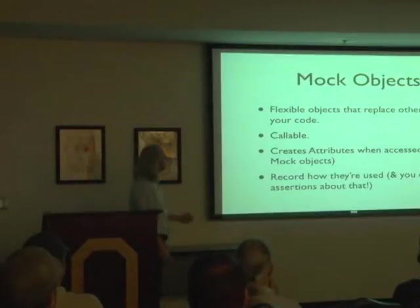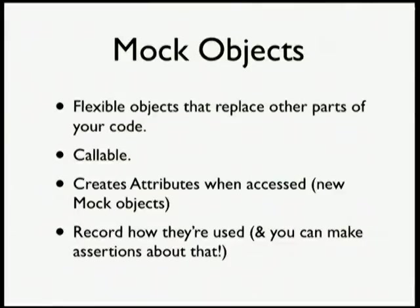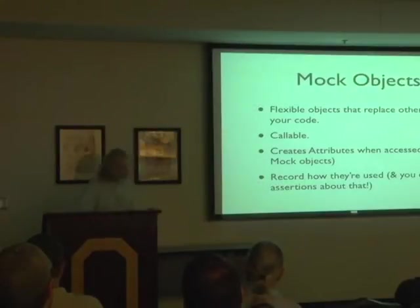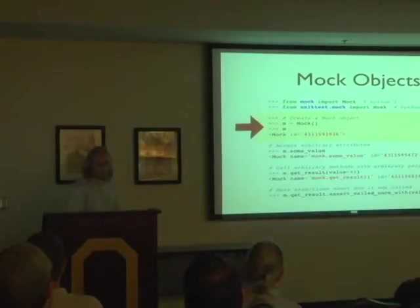Let's talk about mock objects. They are flexible objects that replace other parts of your code. Mock objects are callable. You can take a mock object and access an attribute — mock remembers that you accessed an attribute and gives you a new mock object. You can call any method on a mock object and it will again give you another mock object. And mock remembers what you do, so you can make assertions about how you called things, the order in which they were called, what parameters were passed in.